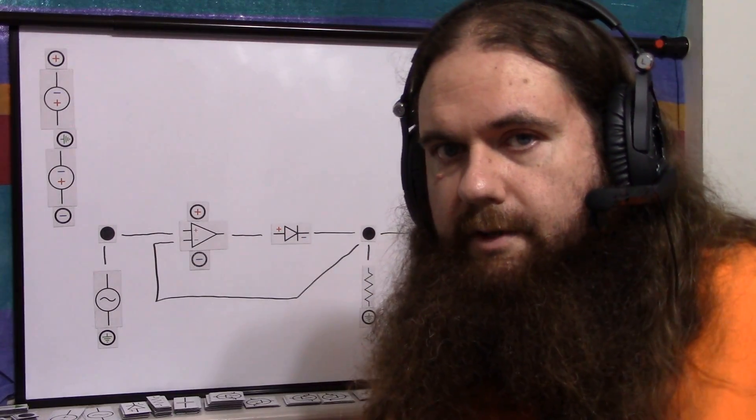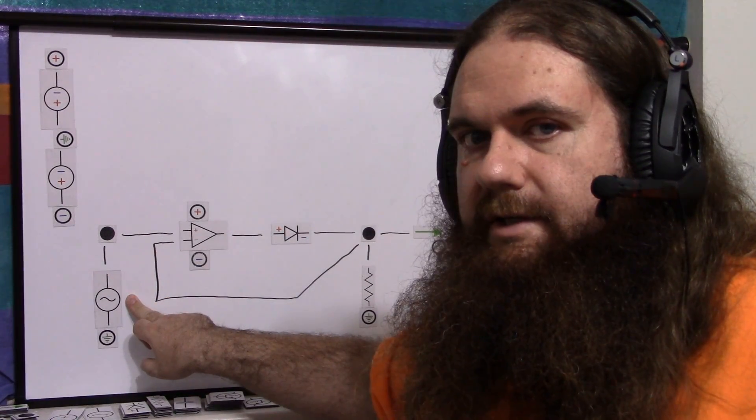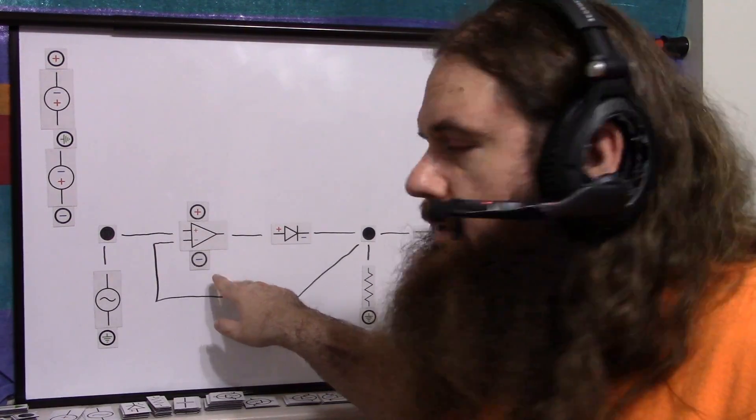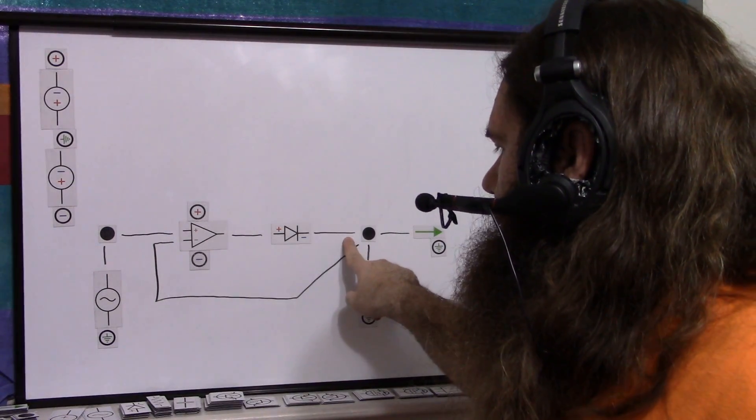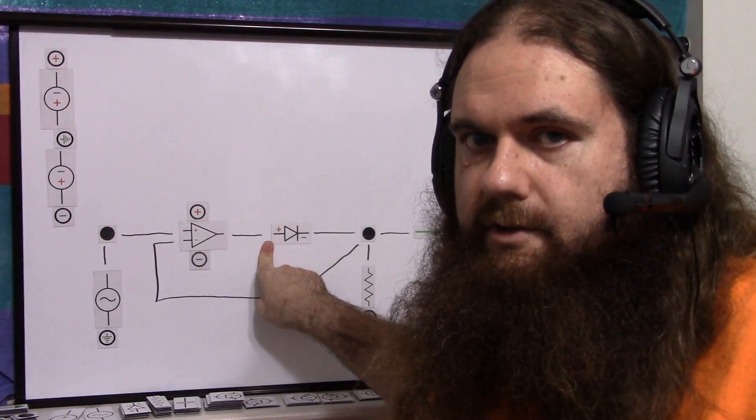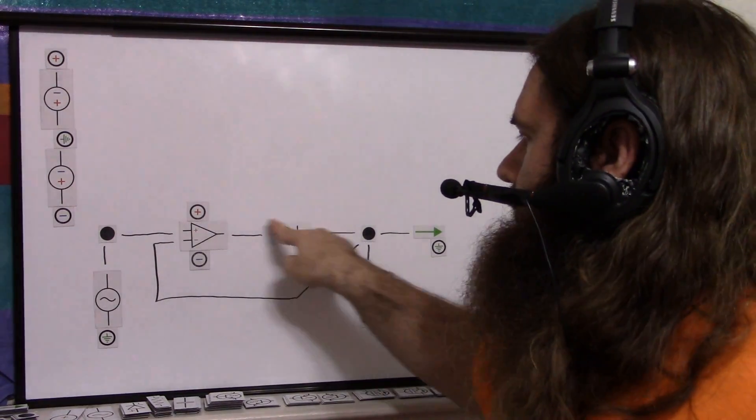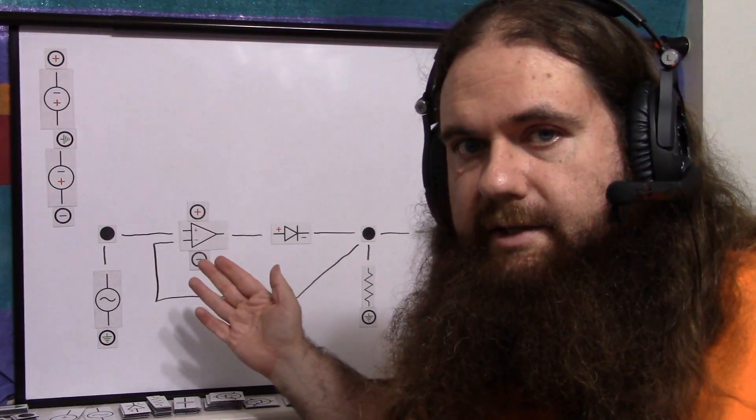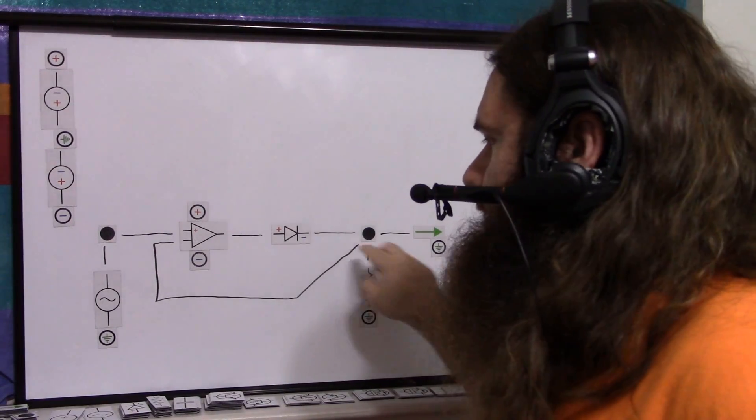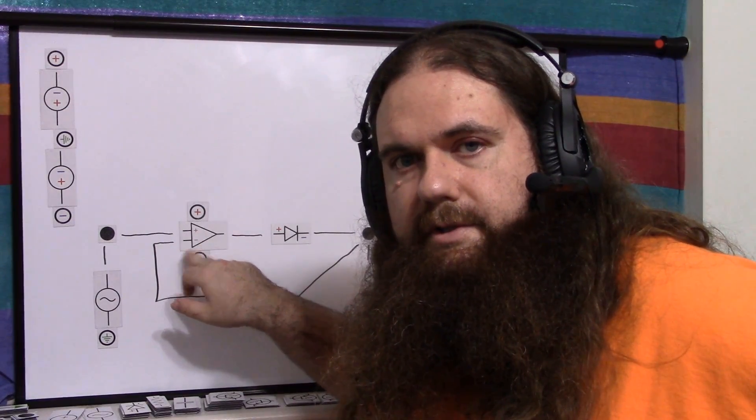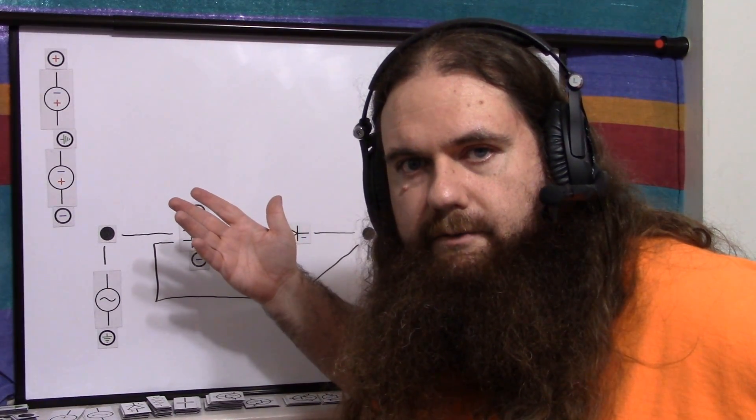When the signal is negative, then the op amp is trying to turn its output down until it can put a negative voltage here, but a negative voltage will not be realized across this diode. From ground through negative, the diode won't allow it. So the op amp is disconnected, so you have a pull-down resistor and no current flows through the diode. So this reproduces the positive side of the signal.